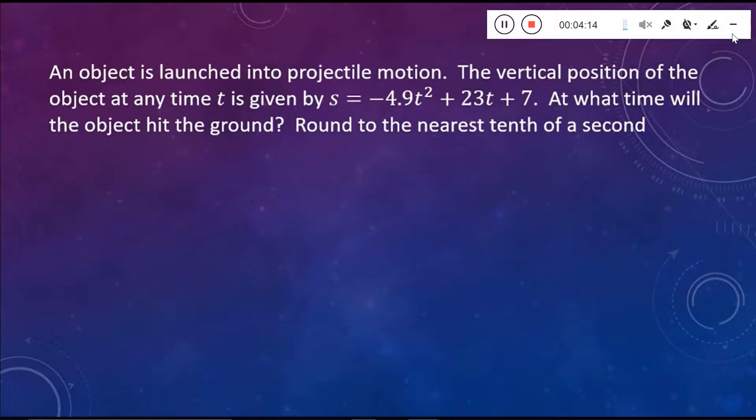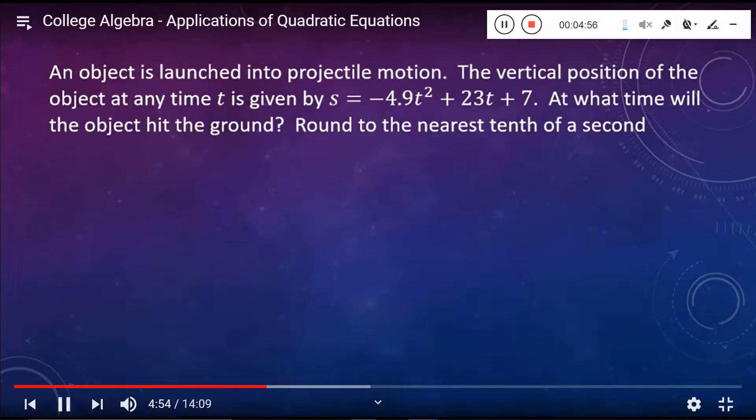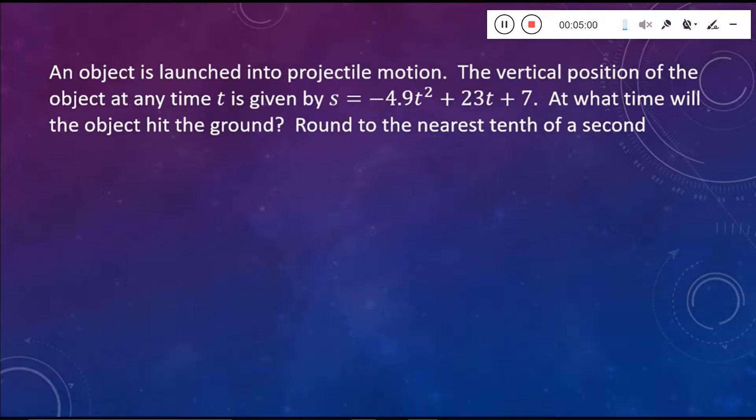So this is a very ugly looking quadratic. Again, we had our three methods that we can use to solve quadratic equations, factoring, completing the square, or the quadratic formula. If you have projectile motion problems, because the number in front of t squared is always going to be something that's not one, I would not recommend completing the square. I would not recommend trying to factor this thing. I would just go ahead and use the quadratic formula.